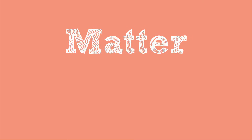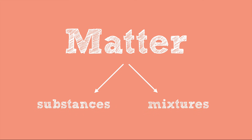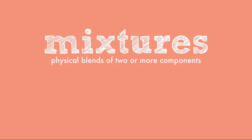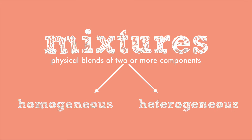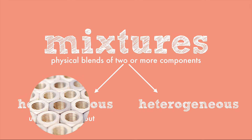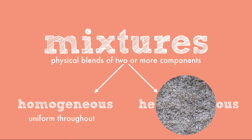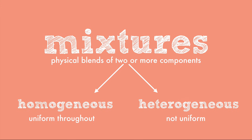Now let's back up a little and go back to the part where we split matter into two categories. It's time to look at mixtures in a little more depth. Mixtures are physical blends of two or more components. Mixtures can be homogeneous or heterogeneous. Homo means same, so homogeneous mixtures are uniform and smooth throughout, like air, steel, or milk. Hetero means different, so heterogeneous mixtures are not uniform — in fact, they might be spotted or chunky like granite, or hardly even mixed at all like oil and water in salad dressing.